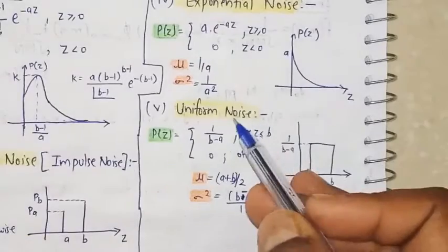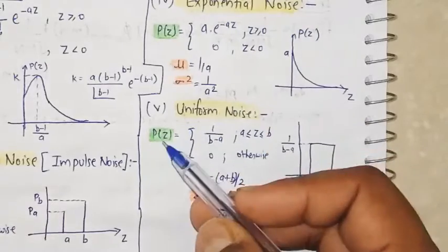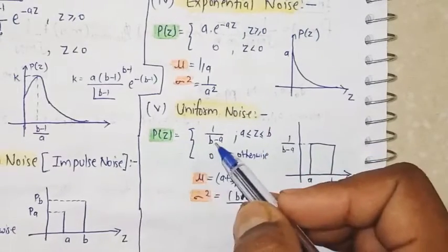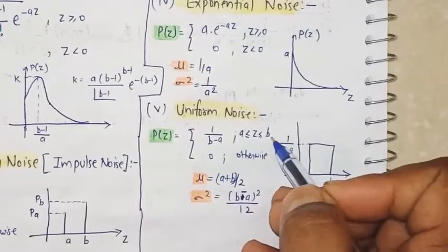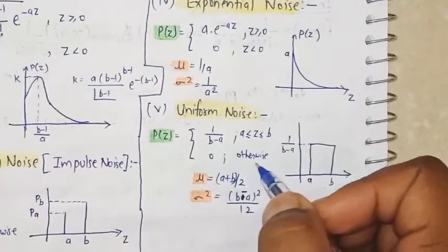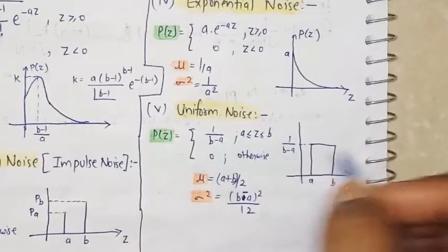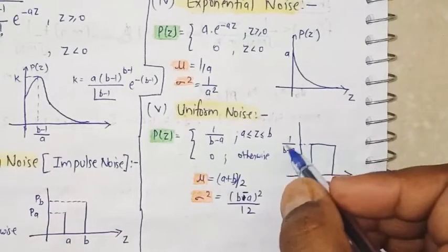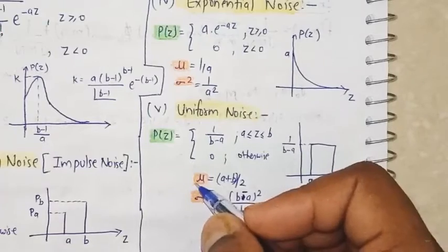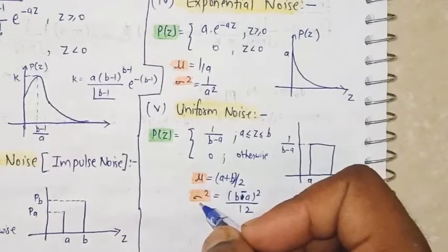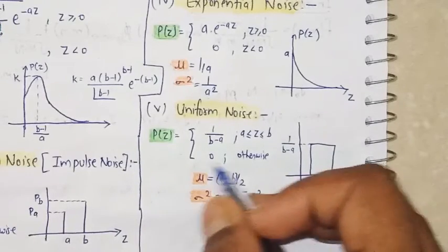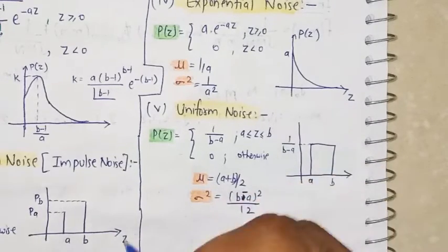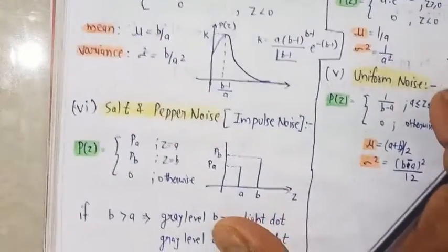The fifth noise model is the Uniform noise model. p(z) = 1/(b − a) when z lies between a and b, and 0 otherwise. The diagram is a flat rectangle between a and b with height 1/(b − a). The mean value is (a + b)/2 and the variance is (b − a)²/12, similar to the values used in the Gaussian noise model.